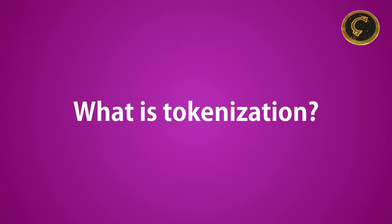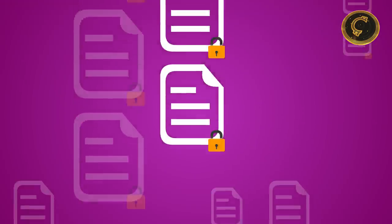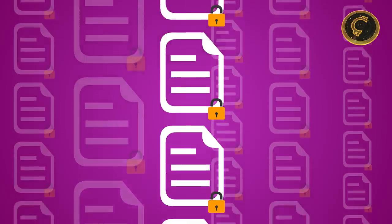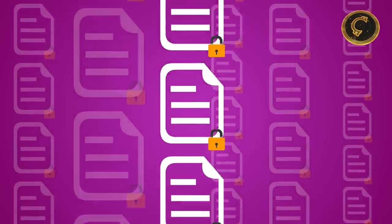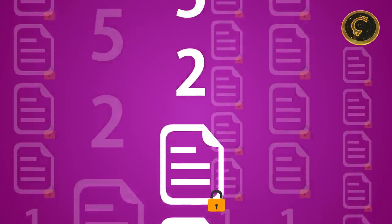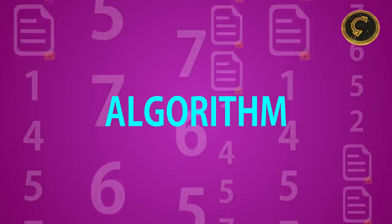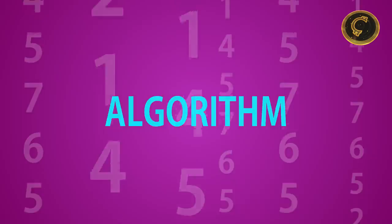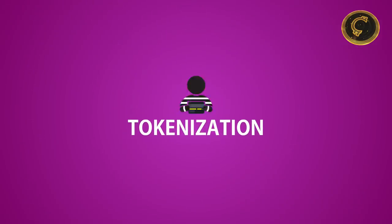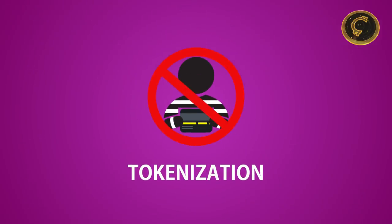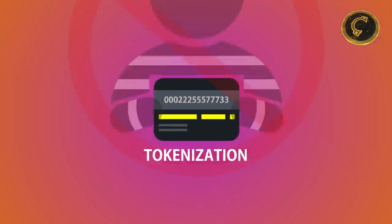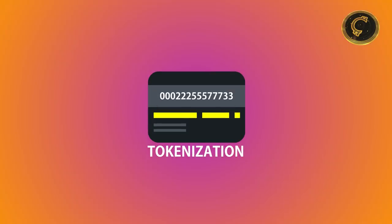What is tokenization? Tokenization is the process of protecting confidential data by replacing a number generated by a token, called an algorithm. Tokenization is often used to avoid credit card fraud. In credit card tokenization, the customer's primary account number, PAN, is replaced by a series of randomly generated numbers called tokens.